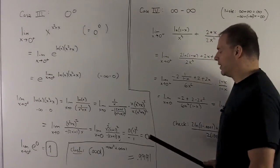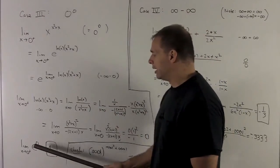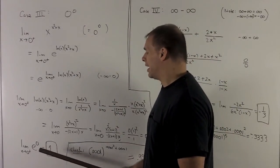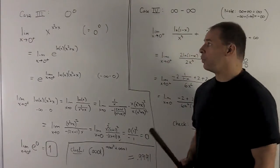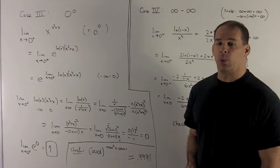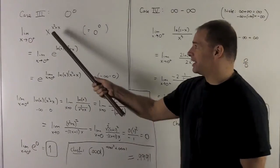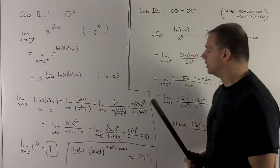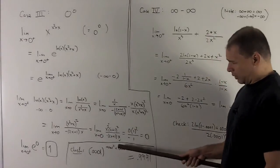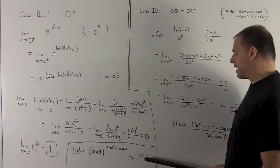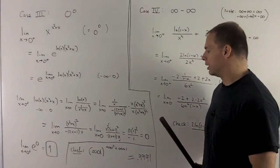But we're not finished — that 0 is just the exponent limit. Our final answer is e to the 0, which equals 1. Checking with a calculator: putting in 0.0001 gives approximately 0.9991, which is close enough to 1, confirming we have the right answer.